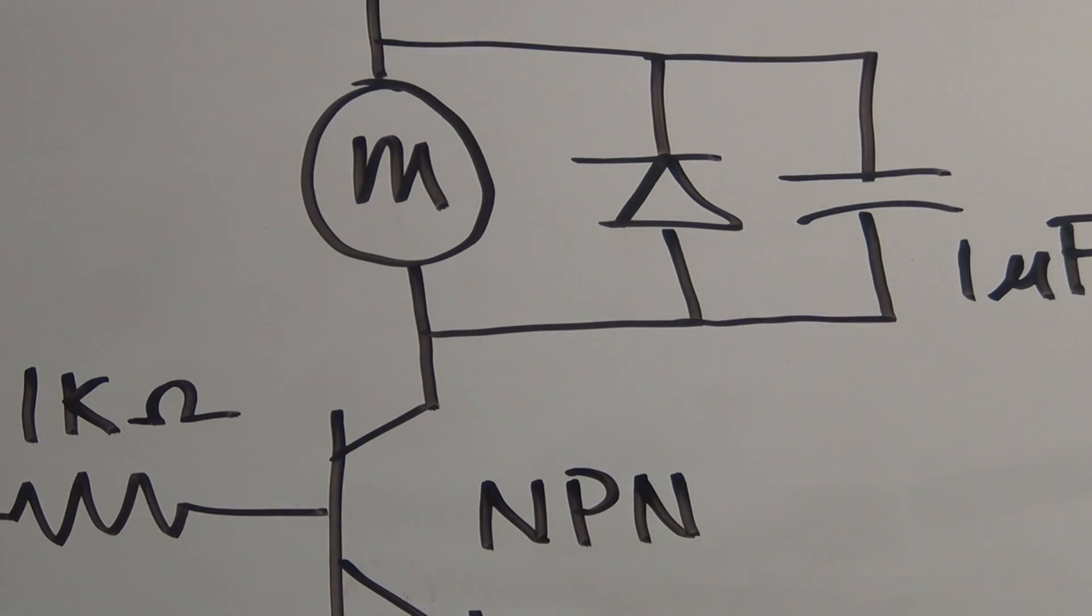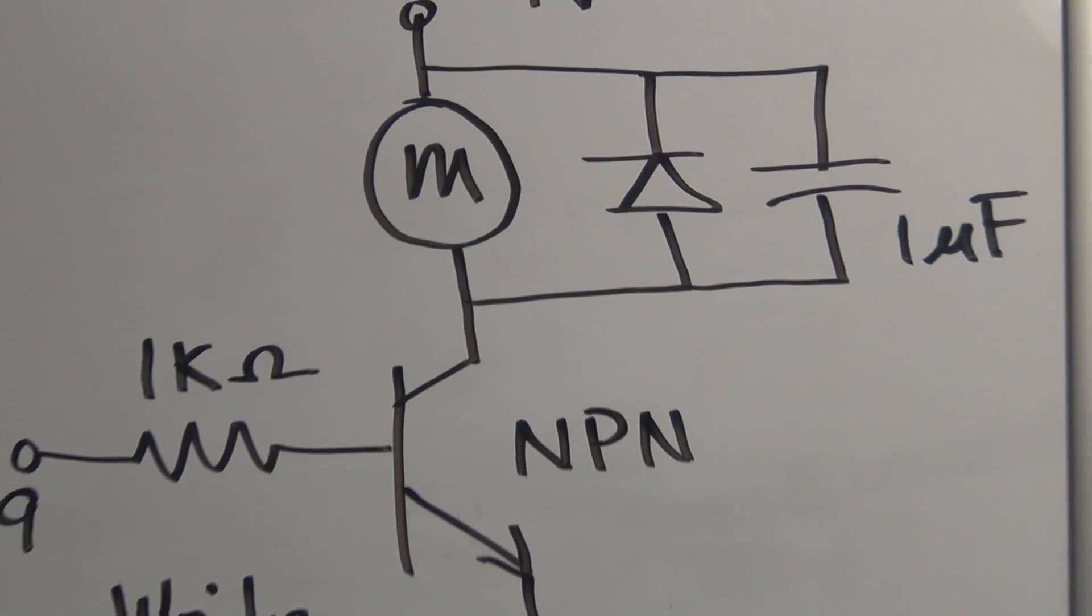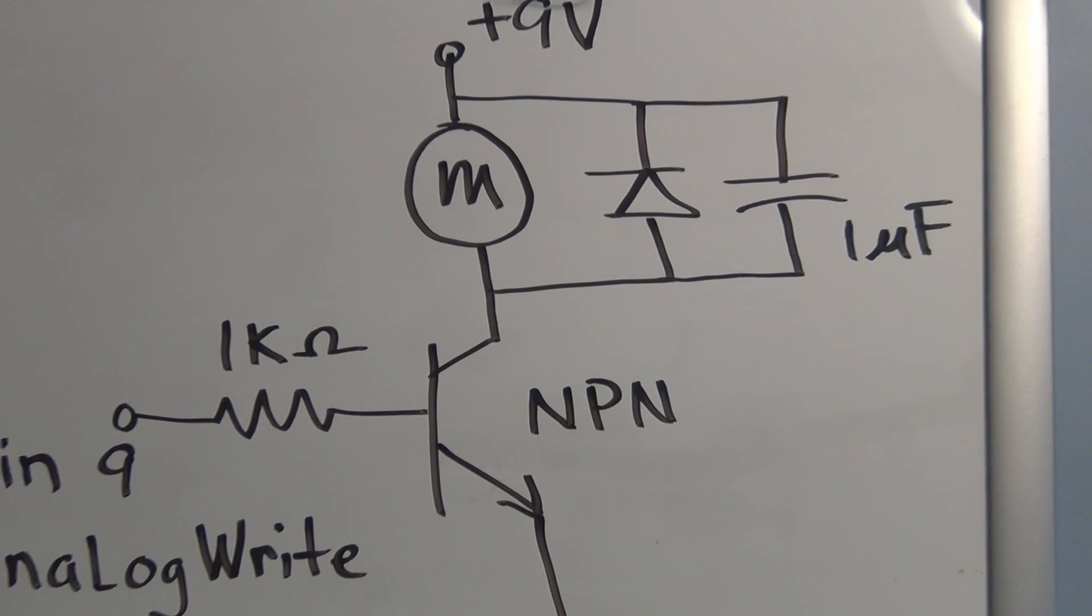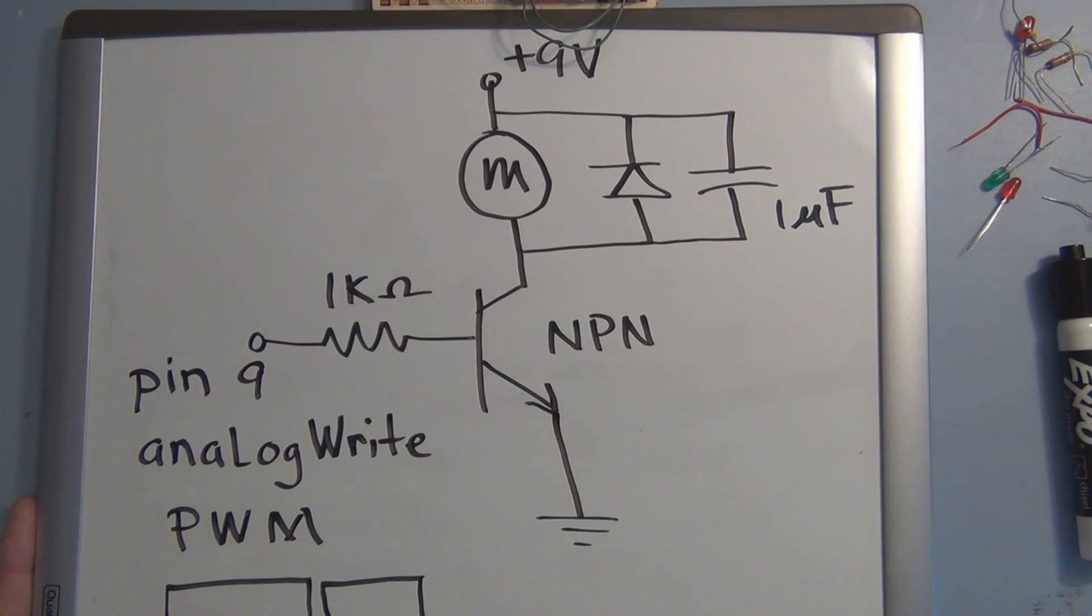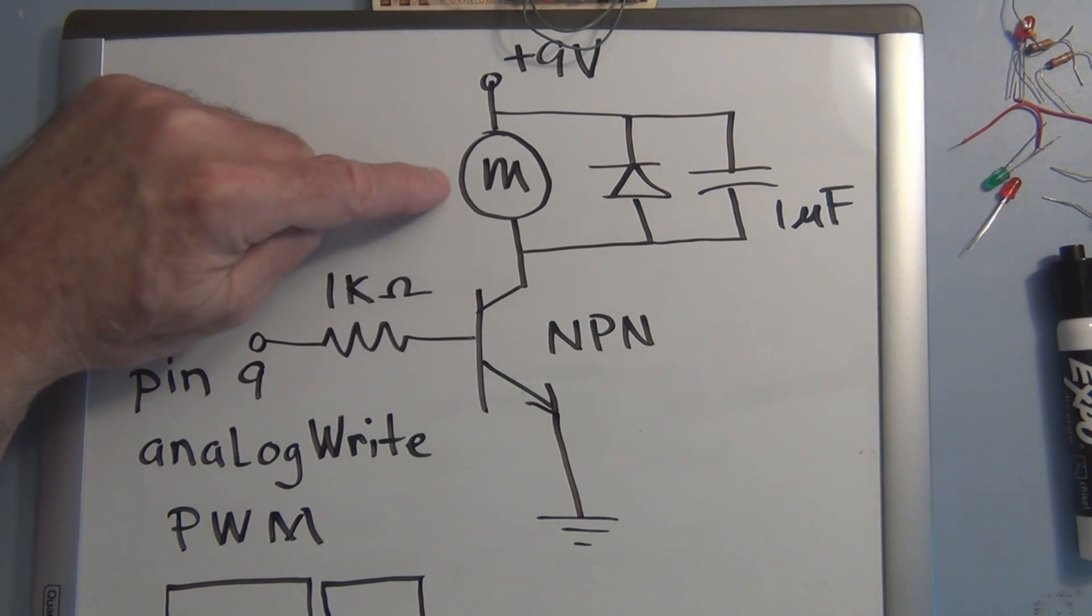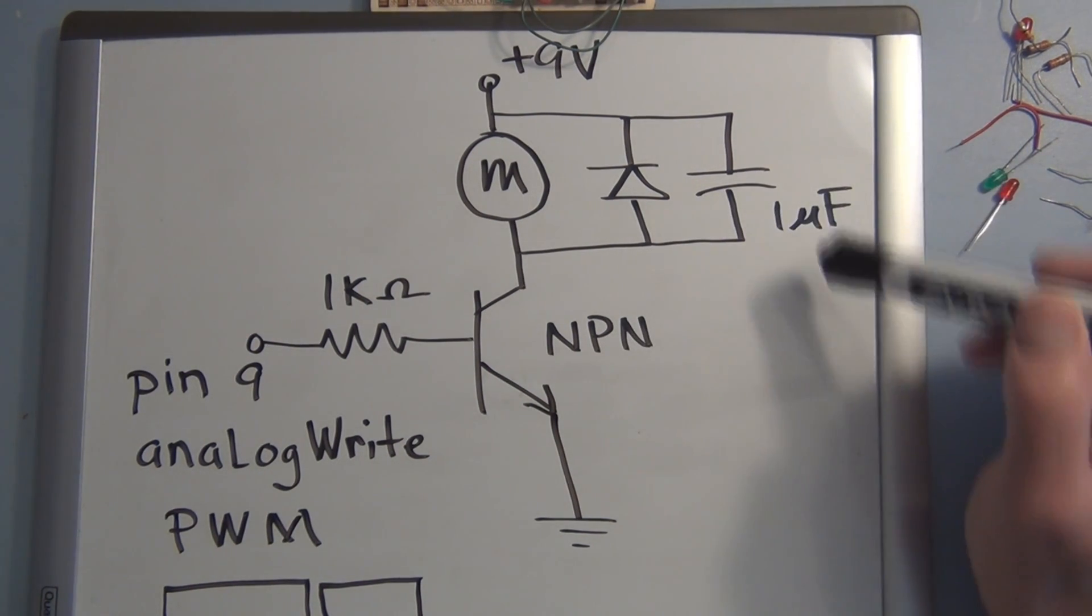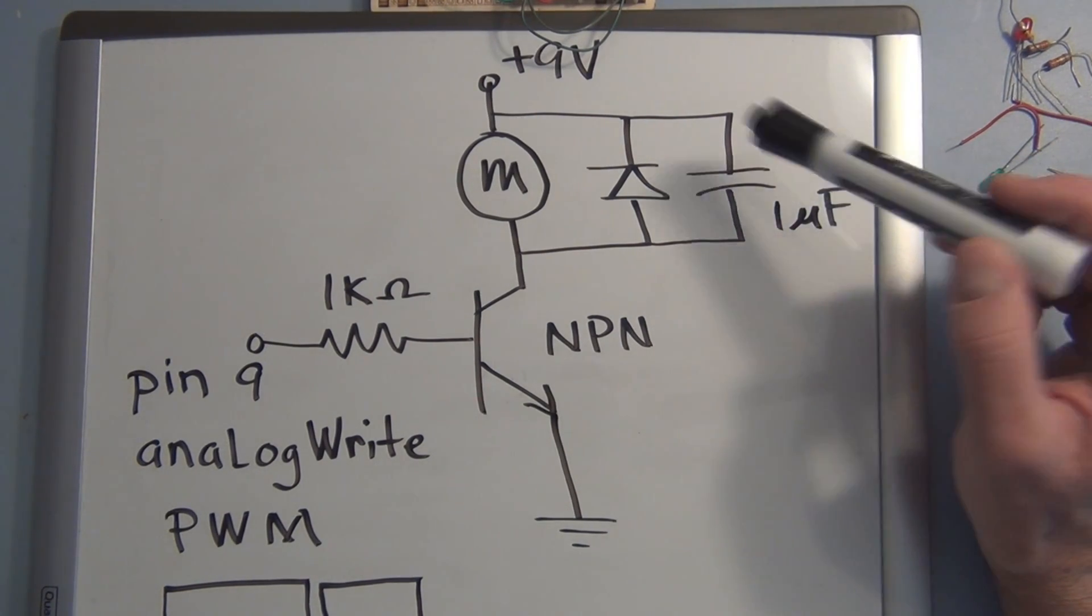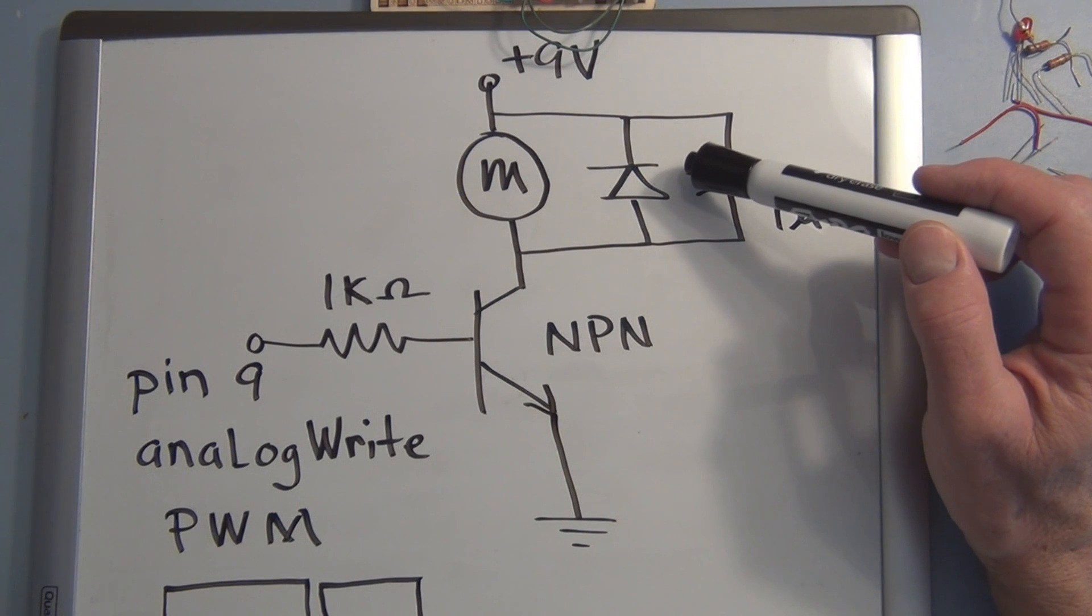Well, let me show you the circuit real quick. Very simple here. So we just have an NPN transistor driving this motor, and we also have this diode capacitor combination. The capacitor sort of acts as a filter for noise that the motor produces, and you've got the diode.